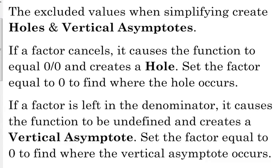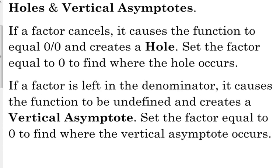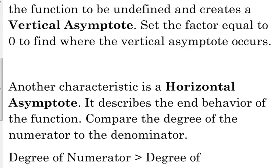The other option is if the factor is left in the denominator — that causes the function to be undefined, and that's a vertical asymptote. We set that factor equal to 0 to find out where the vertical asymptote occurs. We also have a horizontal asymptote, which describes our end behavior. With polynomials, our end behavior was going to positive or negative infinity, but that's not always the case with rational functions.